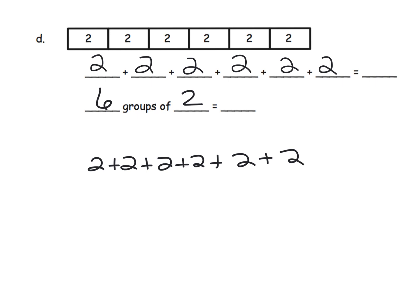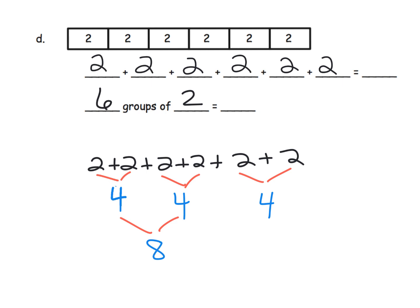We want to remind students: what's a fast way of adding all those twos? One way is to use pairs. Those two twos are four, these two twos are four, and these two twos are four. Then those two fours are eight, so eight plus four is twelve. Six groups of two equals twelve.